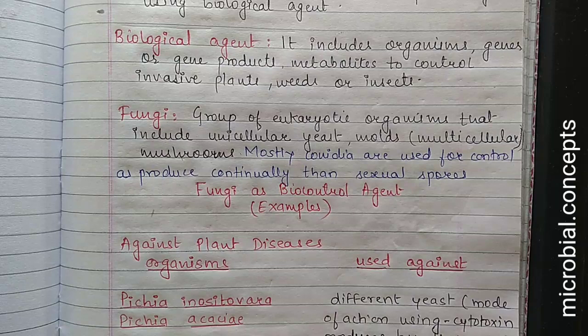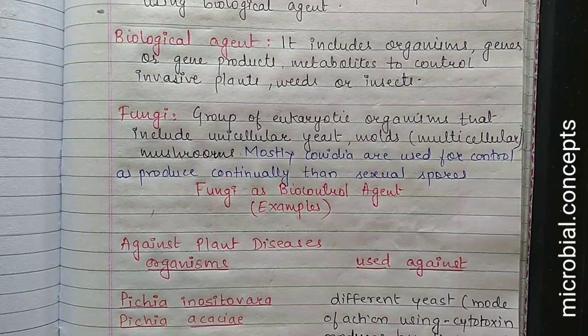Fungi are a group of eukaryotic organisms that include unicellular yeasts, multicellular molds, and mushrooms. Mostly conidia are used for biological control as they are produced continuously compared to sexual spores. Now let's start with some examples of fungi used against plant diseases.